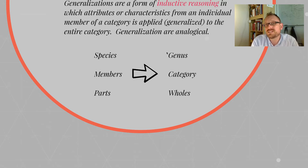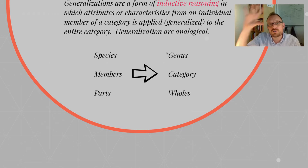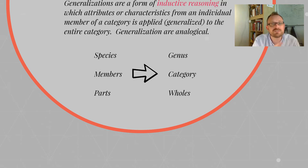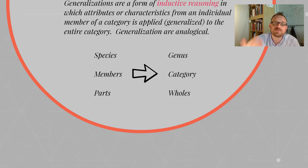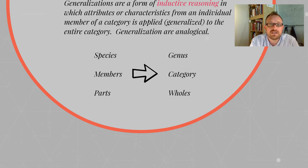Homo erectus, Homo sapien — both of those are members of the larger category of hominid. So a generalization works by taking characteristics of the species — the members or the parts — and then applies them to being characteristics of the genus, the entire category, or the whole thing.